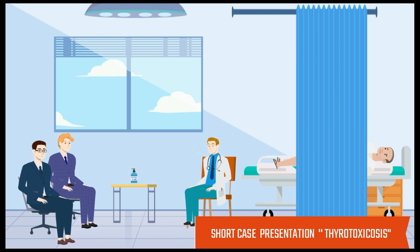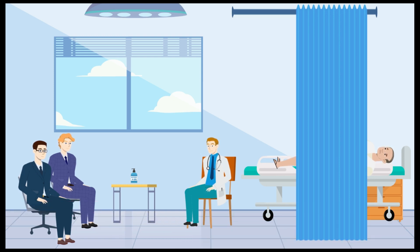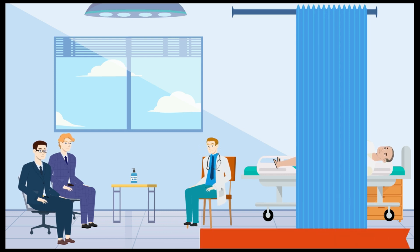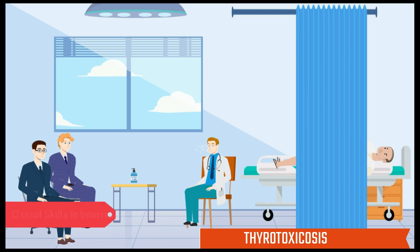The pulse of the patient is 120 per minute and it is regular. Blood pressure is 140/80 mmHg. The patient is afebrile with a respiratory rate of 16 breaths per minute. My diagnosis is thyrotoxicosis.